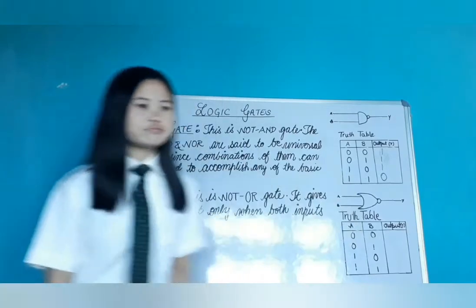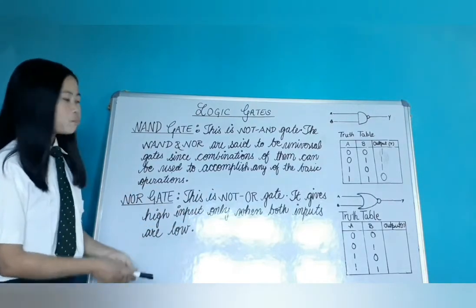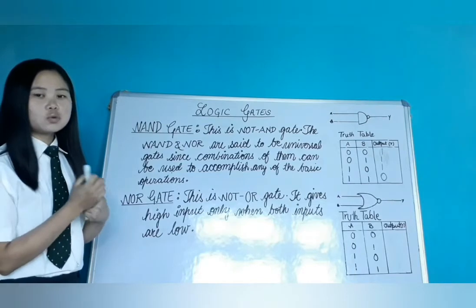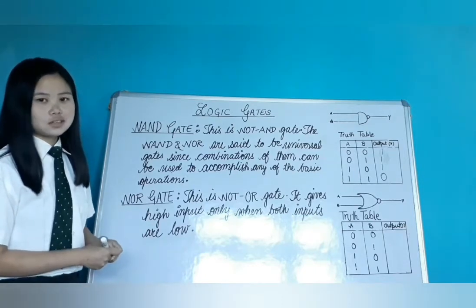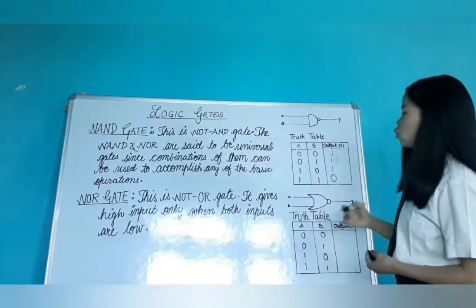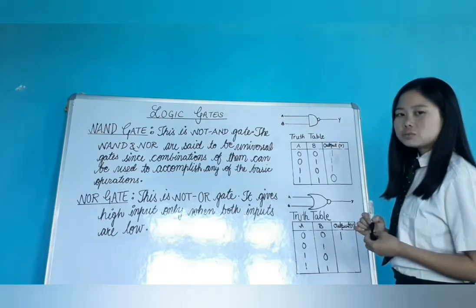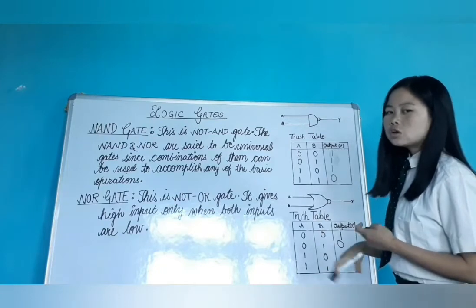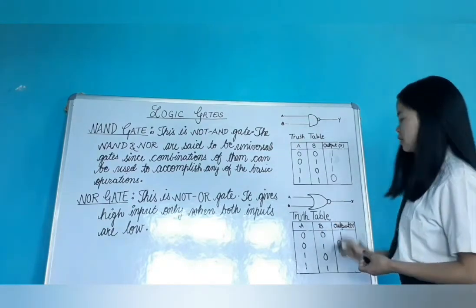Now, NOR gate. NOR gate gets a high output only when both inputs are low. NOR gate is the combination of NOT and OR gate. If we need a high output signal, both the input signals must be low. NOR gate truth table: both inputs low gives high output; one input low and one high gives low output; one input high and another low gives low output; both inputs high gives low output.